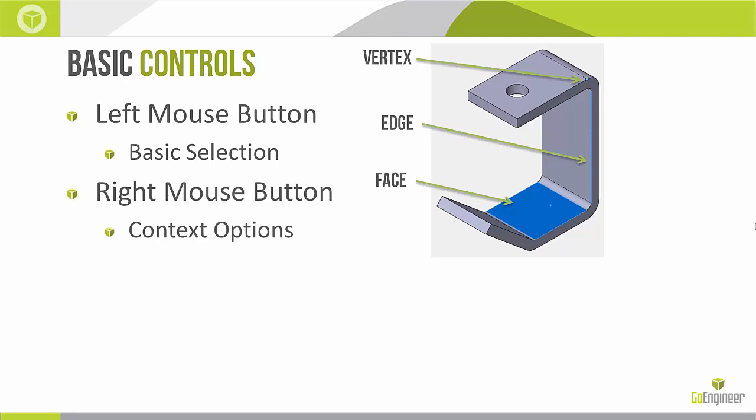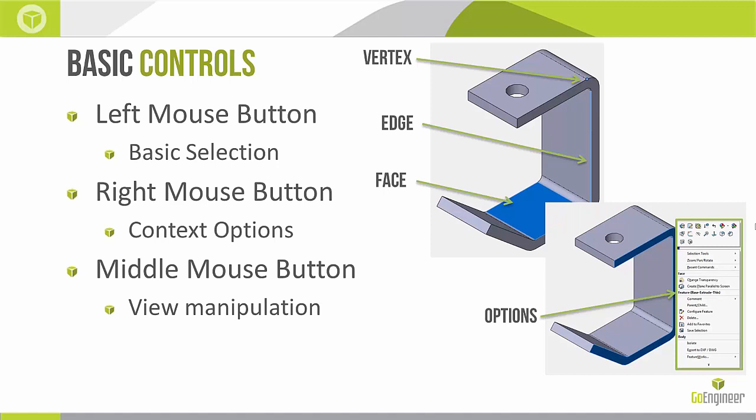We have the right mouse button. When we right-click — for instance, on a face — we get context options. When I right-click on the face, I get all these different options that are specific to a face. If I right-click on an edge or a vertex, I might get slightly different options, because different commands are contextually applied depending on the selection.